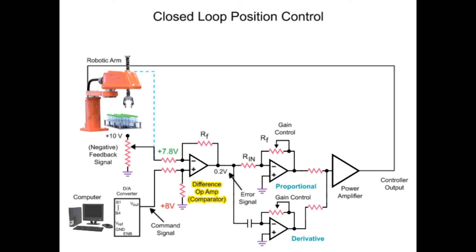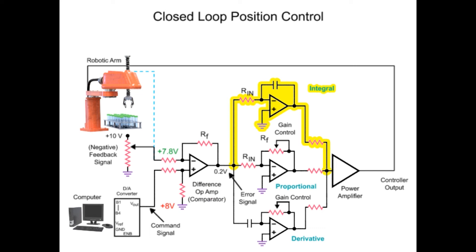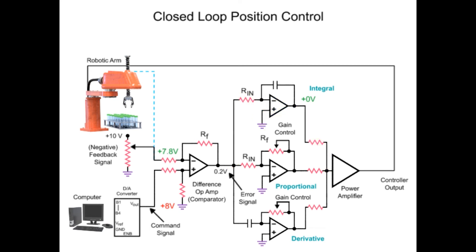To overcome the steady state error, an integral amplifier is added to the circuit. With an error signal of zero, the output voltage of the integral amplifier is zero. The integral amplifier increases gain depending on the duration of the error signal — the longer the error is present, the larger the amplifier gain. The output of the integral amplifier increases and is further amplified by the power amp to overcome the friction and mass of the robotic arm, completing the final move to the desired position.